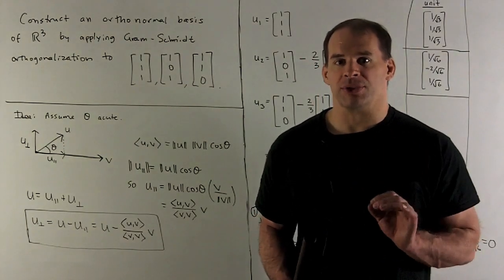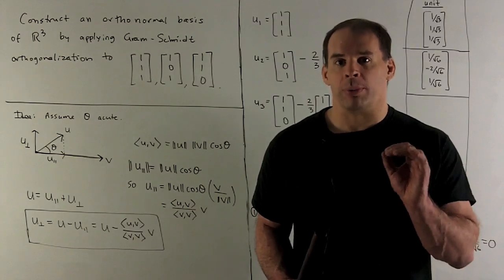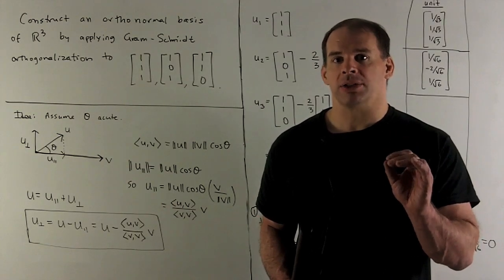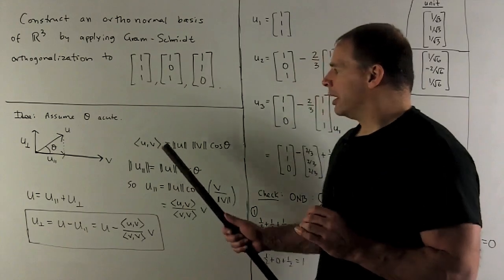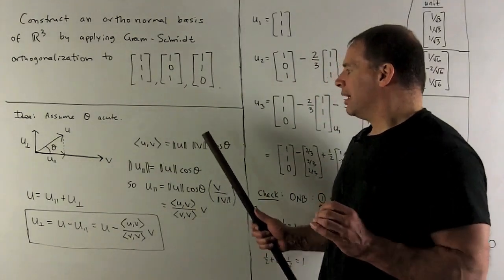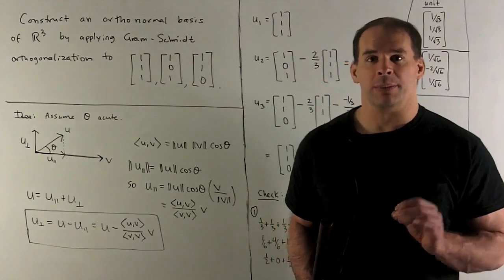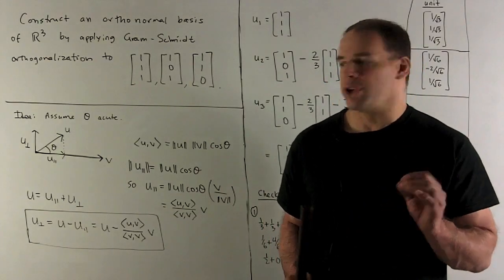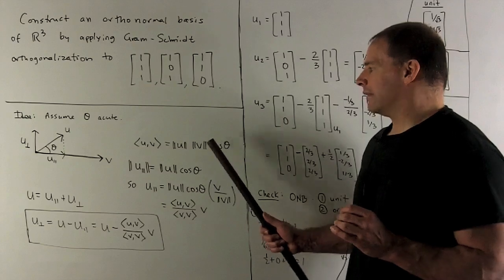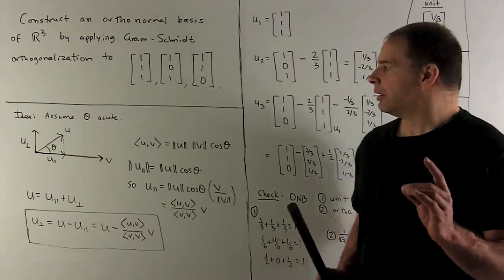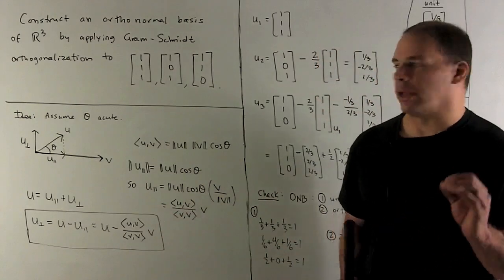Now, unless I'm told something about theta, we're going to have to find a way to substitute that out. And that's where our inner product comes in. We have a geometric formulation of our inner product, which is given by the inner product of u and v equals length of u times the length of v times the cosine of the angle between your vectors. So if I move length of u, length of v to the other side, I can substitute out cosine theta from our length of u_parallel.